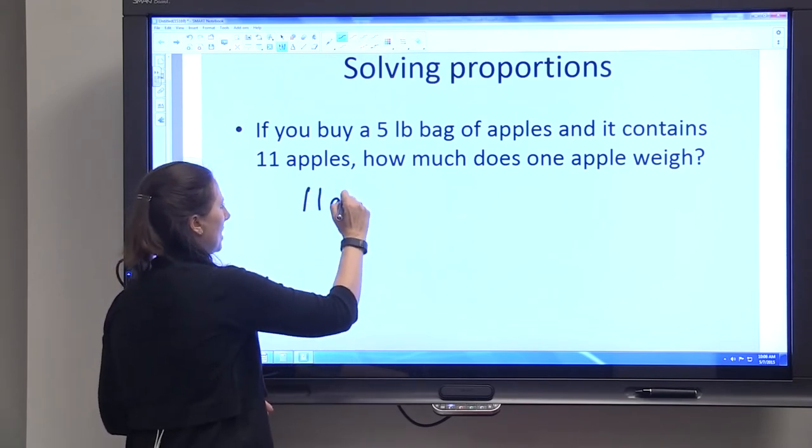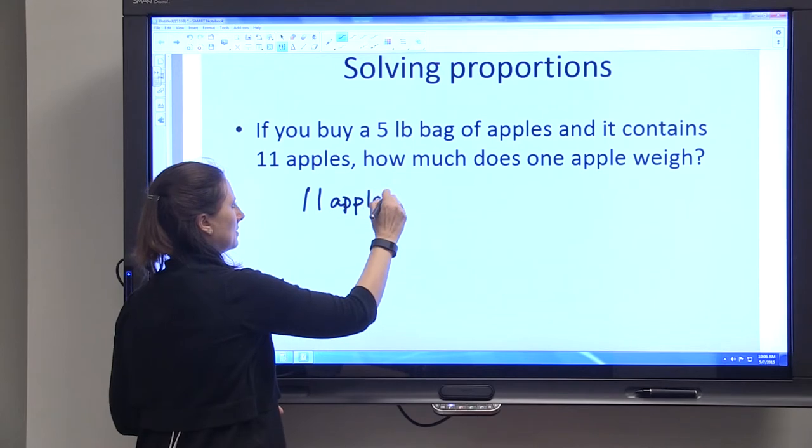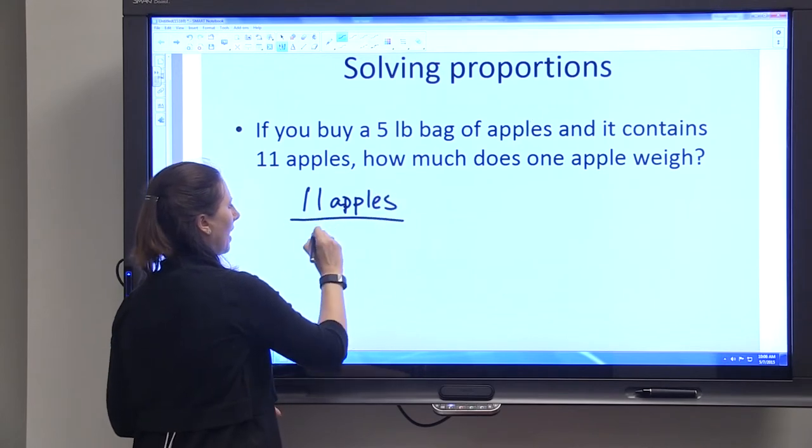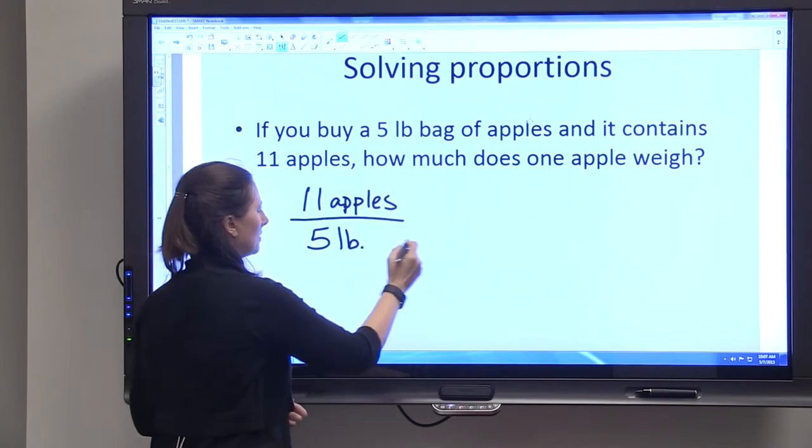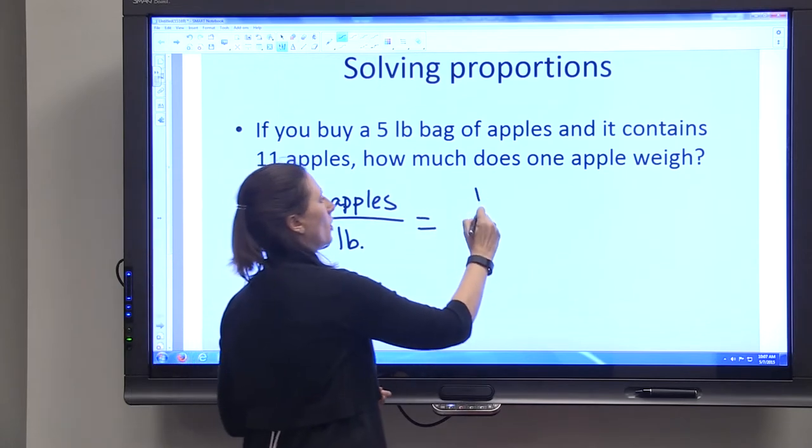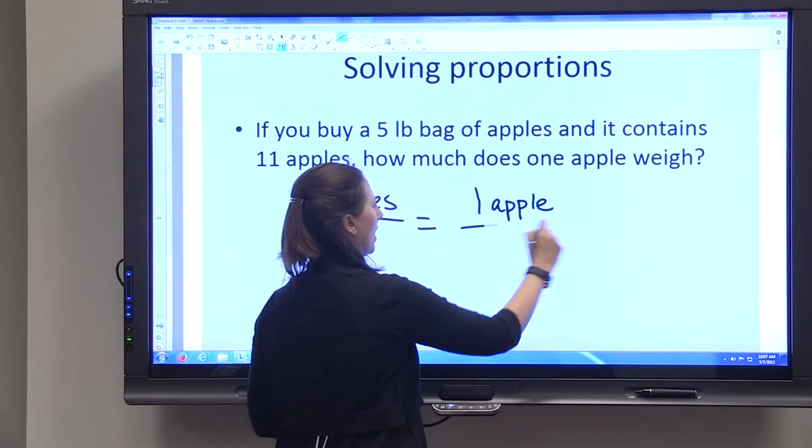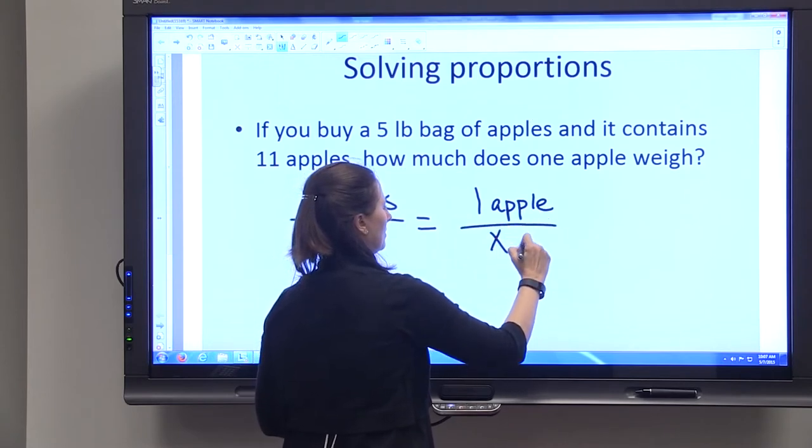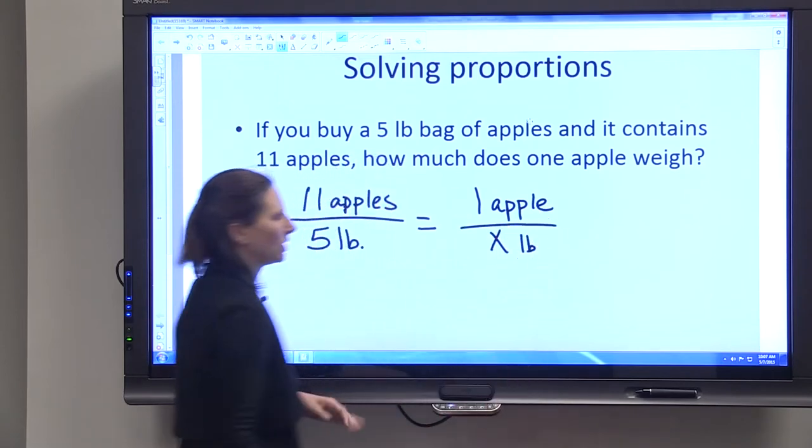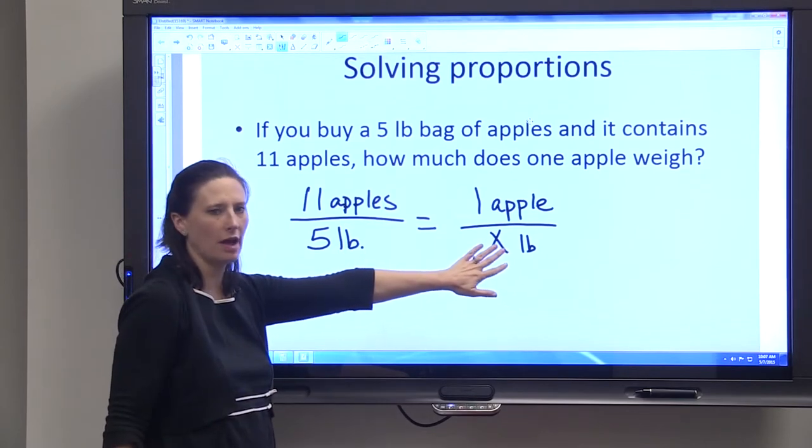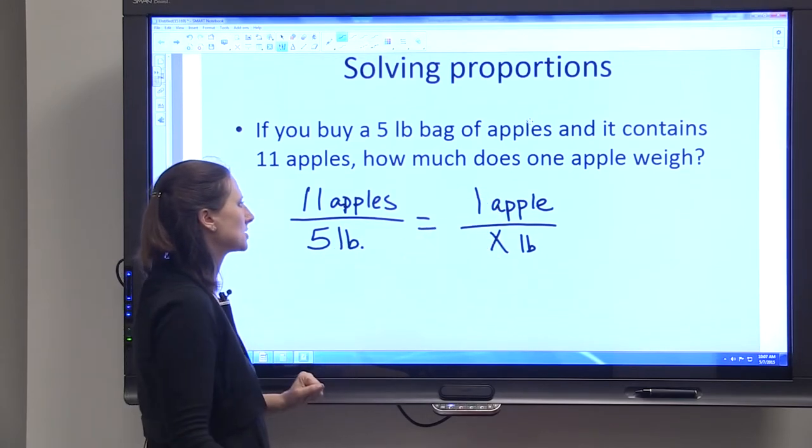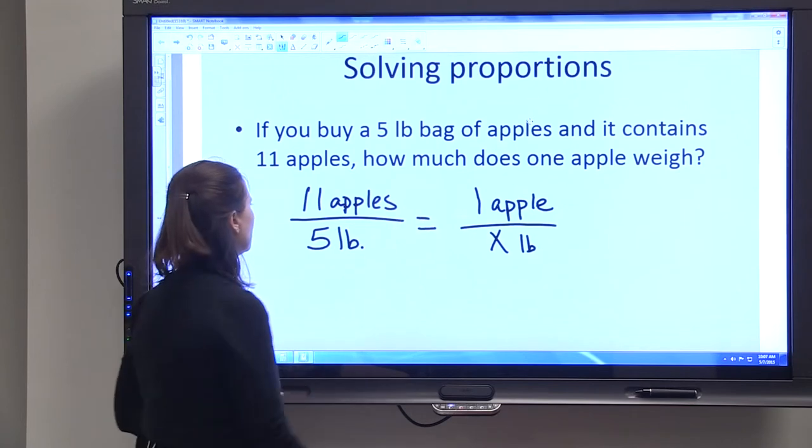If we look at 11 apples in five pounds and we want to know how much one apple weighs, we can set up this proportion. We don't know how many pounds one apple is, but we can cross multiply to solve.